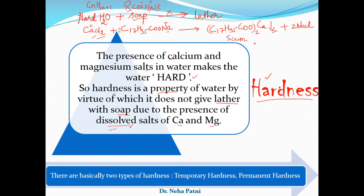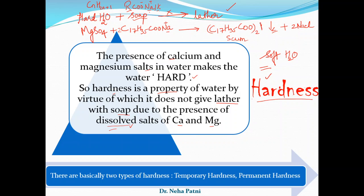Distinguishing hard water from soft water is the first key step before utilizing water in any application. If the water is hard, it will not give lather with soap properly, due to the presence of dissolved salts of calcium and magnesium. For example, similarly, magnesium sulfate reacting with soap would give magnesium stearate as a precipitate — you can change the anion and observe the same pattern.